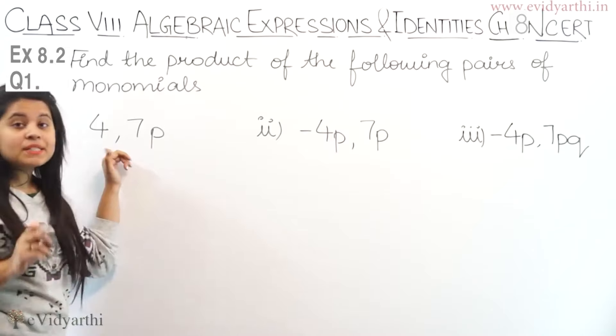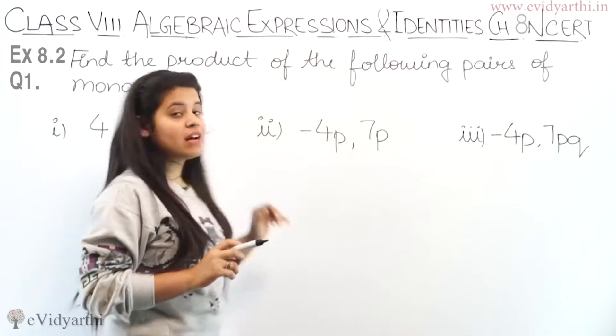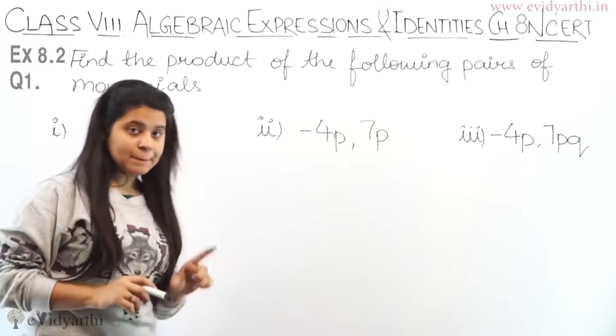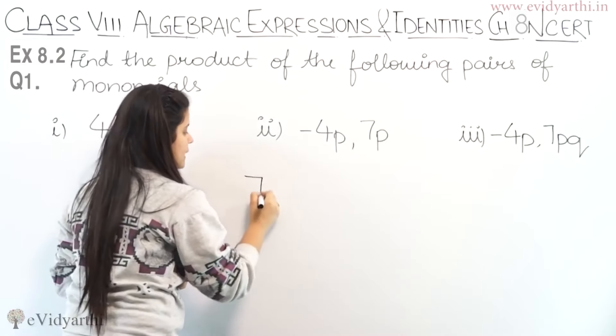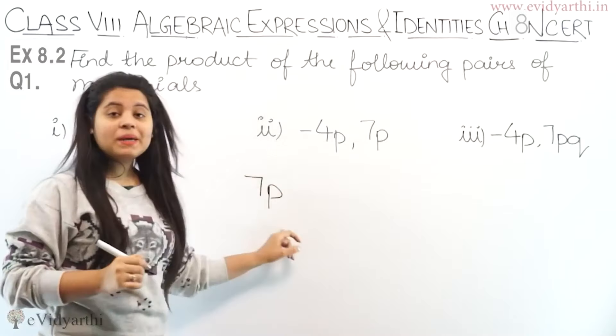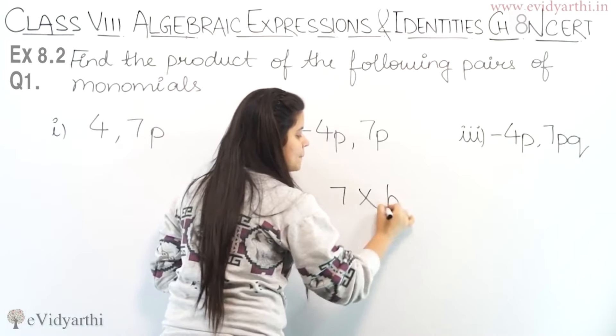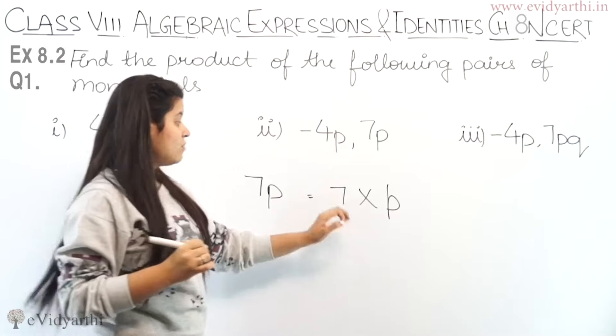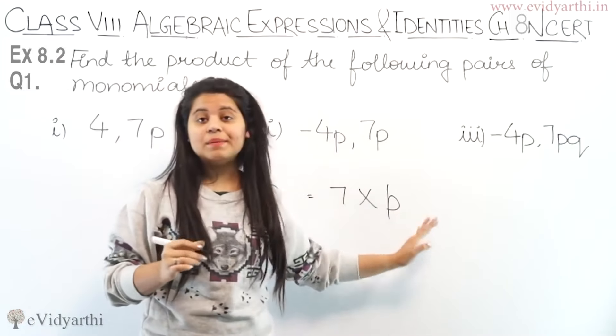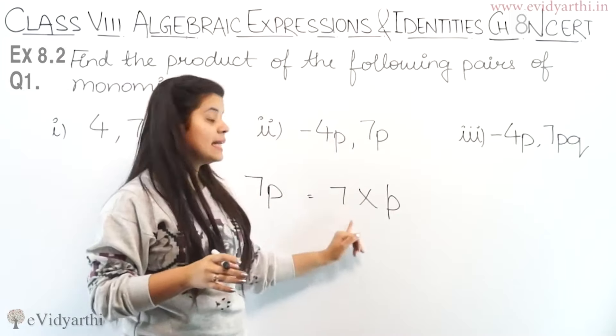We can see that one is a constant number and the other one is a constant variable. If we read 7P, what does 7P mean? That 7 is multiplied by P. And we know that we have constant and variable, but we can multiply.